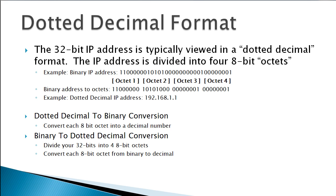Even though the IP address is a 32-bit number, we usually communicate it in a notation we call dotted decimal. The way dotted decimal works is we take our 32-bit IP address and split it up into chunks called octets, because each chunk contains eight bits. If you take a 32-bit number and split it into eight-bit octets, you get four different eight-bit octets. Then you convert each octet from binary to decimal. For instance, octet one comes out to 192 in decimal, the second octet to 168, and then 1.1.